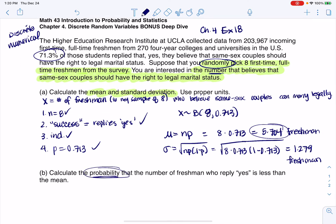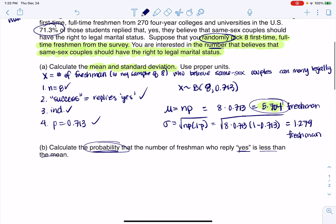All right, so with that being said, let's look at B. It says calculate the probability, so I see that buzzword of probability, that the number of freshmen who reply yes is less than the mean. Okay, well, if we go back to part A, here was my mean, so let's make that sentence into a probability statement. So I need capital P with some stuff in parentheses. The number of freshmen who reply yes is my variable. I have this less than here from that phrase, and then the mean was 5.704.